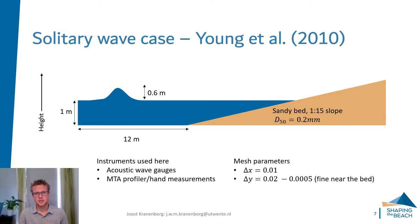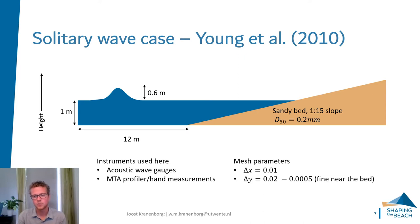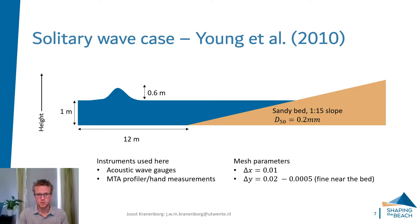The case we are going to study today is a solitary wave case based on the experiments by Young et al. from 2010. This is a case where a solitary wave with a wave height of 60 centimeters runs up a sandy bed with a 1 in 15 slope and a 0.2 millimeter sediment size. Prior to the experiment being compared here, other experiments were also done, so the slope is not exactly 1 in 15 but already has a built-in profile from previous waves.